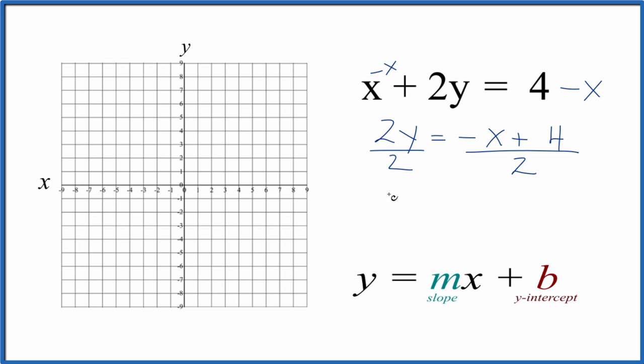2 over 2 is 1, so 1y is just y. Negative x over 2, and then 4 divided by 2 - that's just 2. So negative x over 2 plus 2. Now we have this in slope-intercept form.